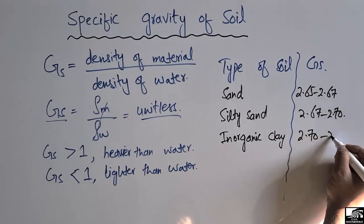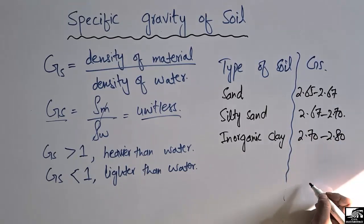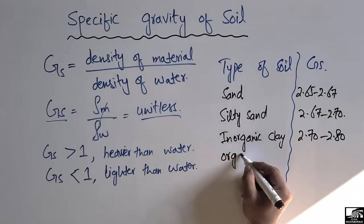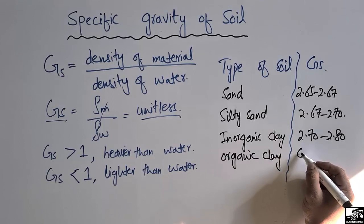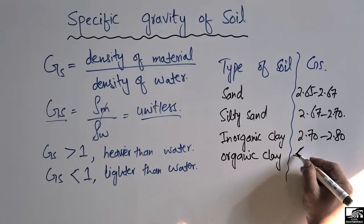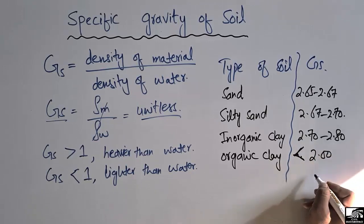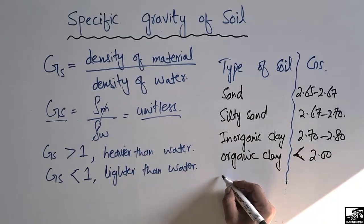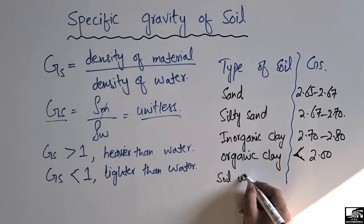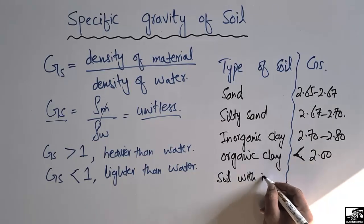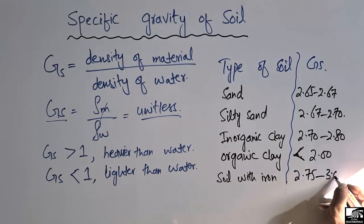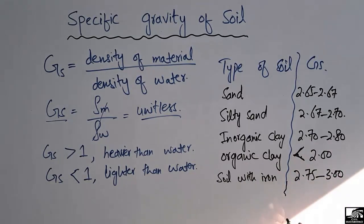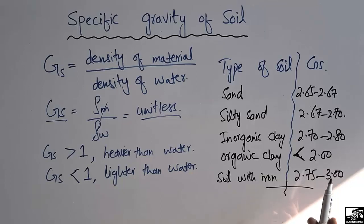For organic clay, the specific gravity is mostly in the range of 1 to 2, or less than 2. For soils with iron content, the specific gravity is in the range of 2.75 to 3. These are some of the most important soil types and their corresponding specific gravity values.